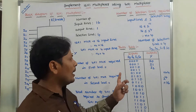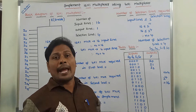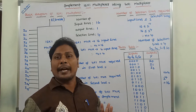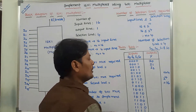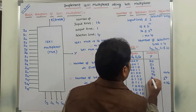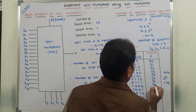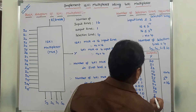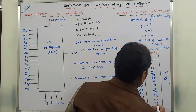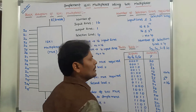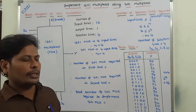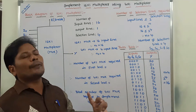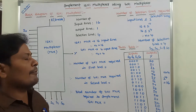In the same way, whatever the S3, S2, S1, S0 values are, we find the equivalent decimal value and the corresponding input I3 through I15 is selected and sent as the output. This is the complete truth table of the required 16 by 1 multiplexer.